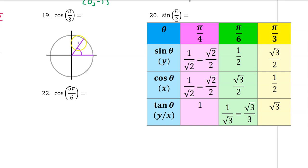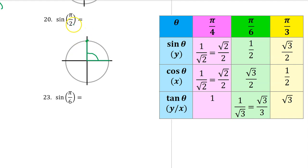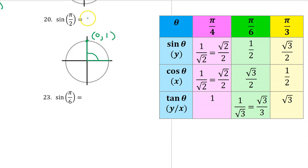Pi over 3 is in the first quadrant, and the cosine of pi over 3 is one of our memorized values — it is 1 half. The terminal side of pi over 2 lands right on the positive y-axis, so we won't use the chart. Instead, we use the coordinates: the coordinates of this point are 0 comma 1, and on the unit circle sine is the y-value, so the sine of pi over 2 is 1.